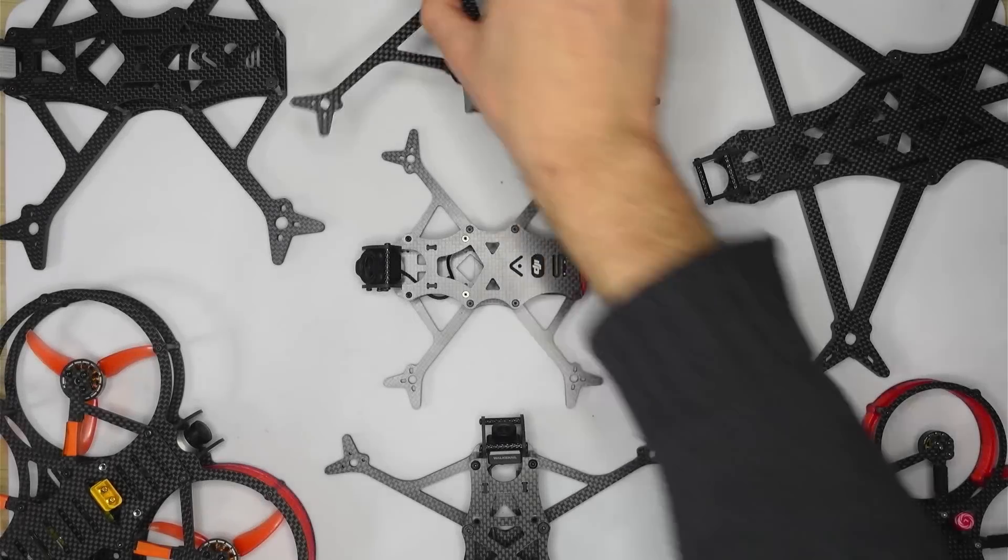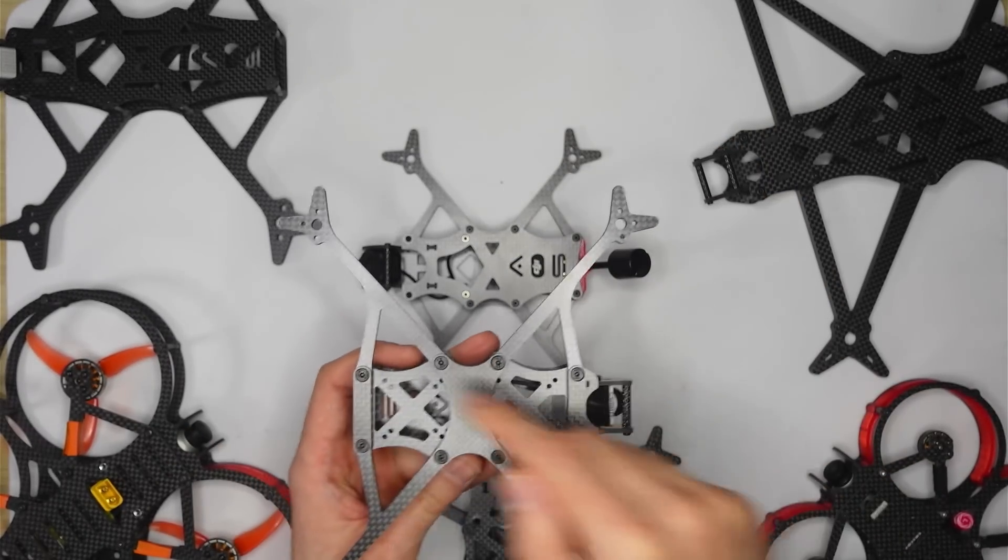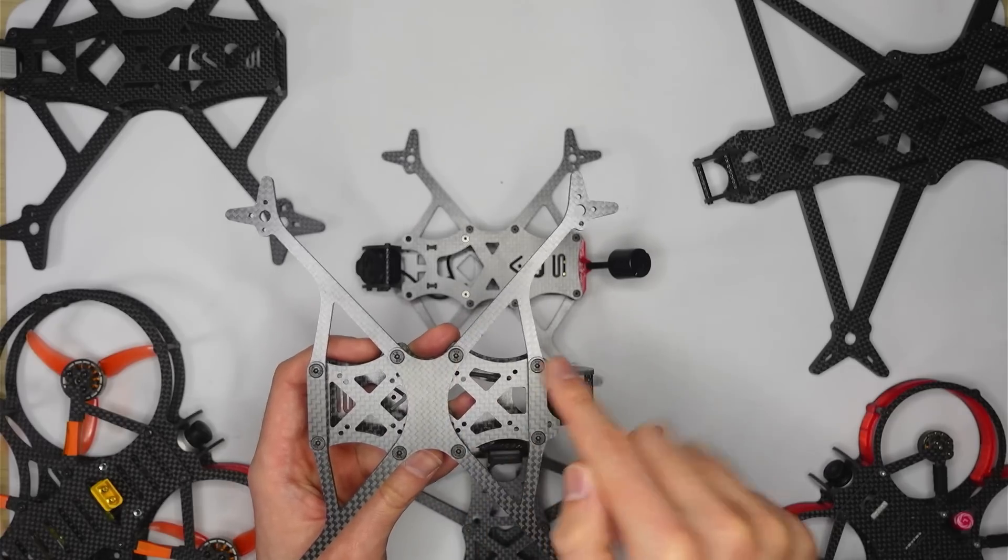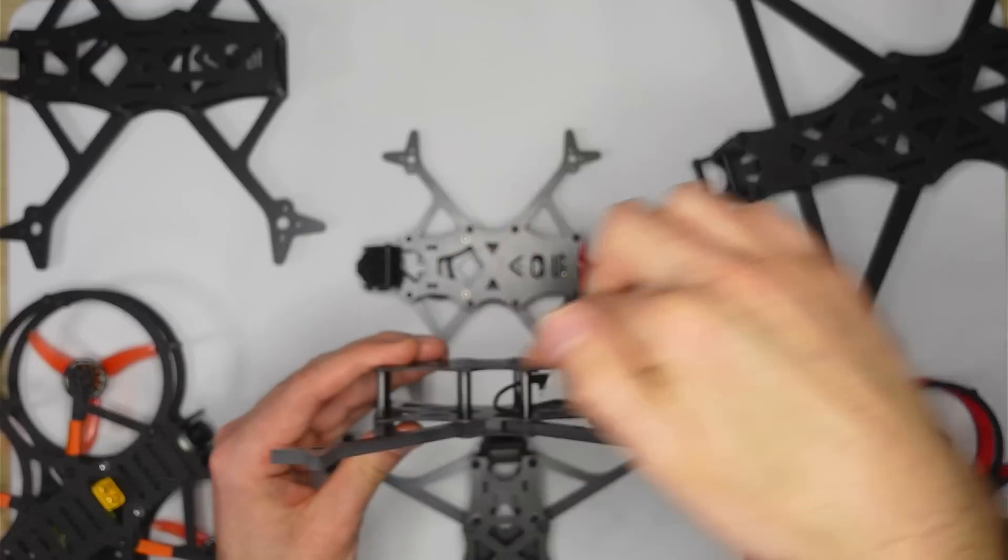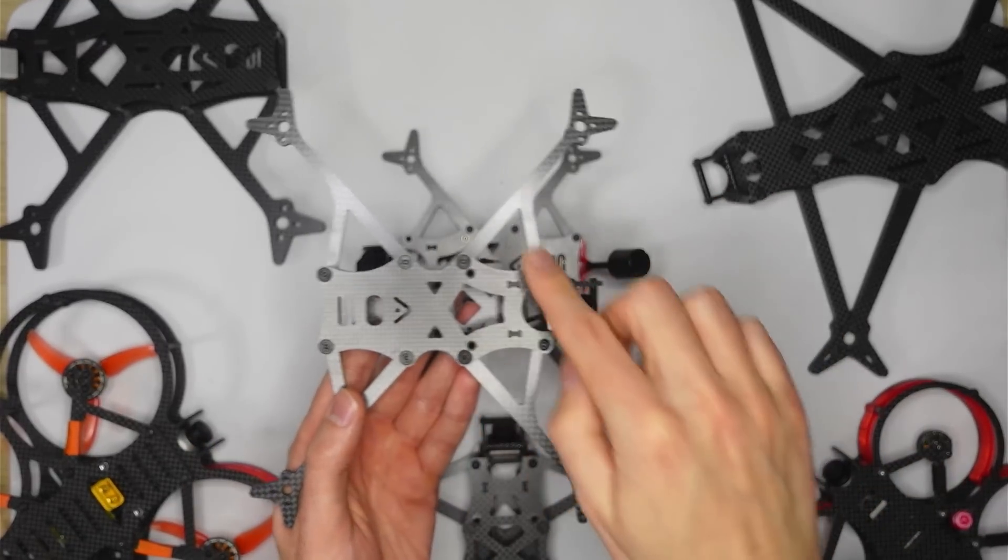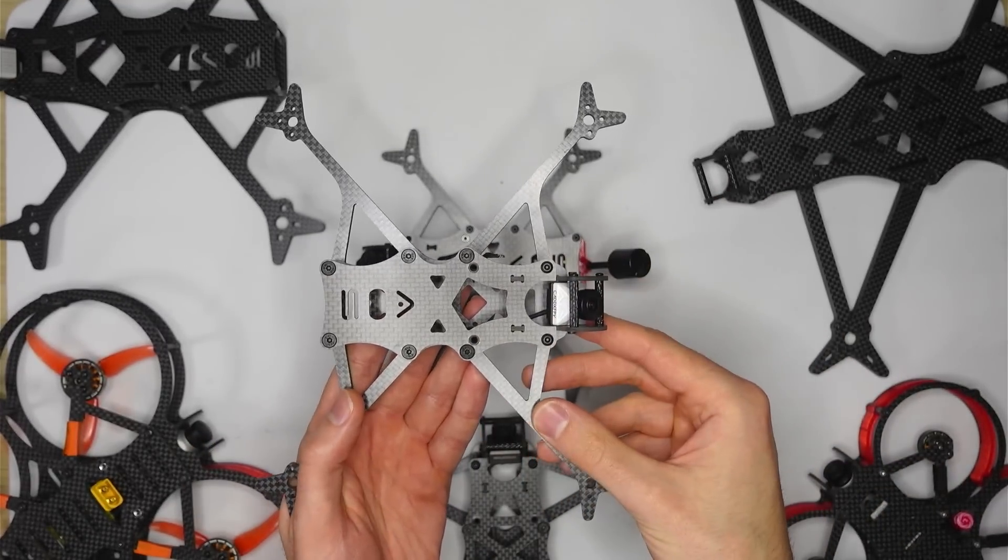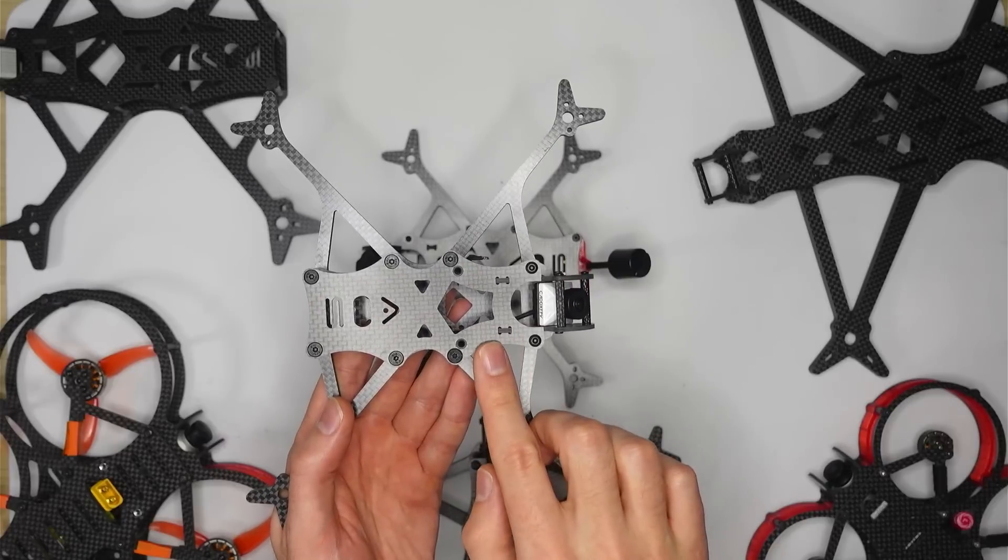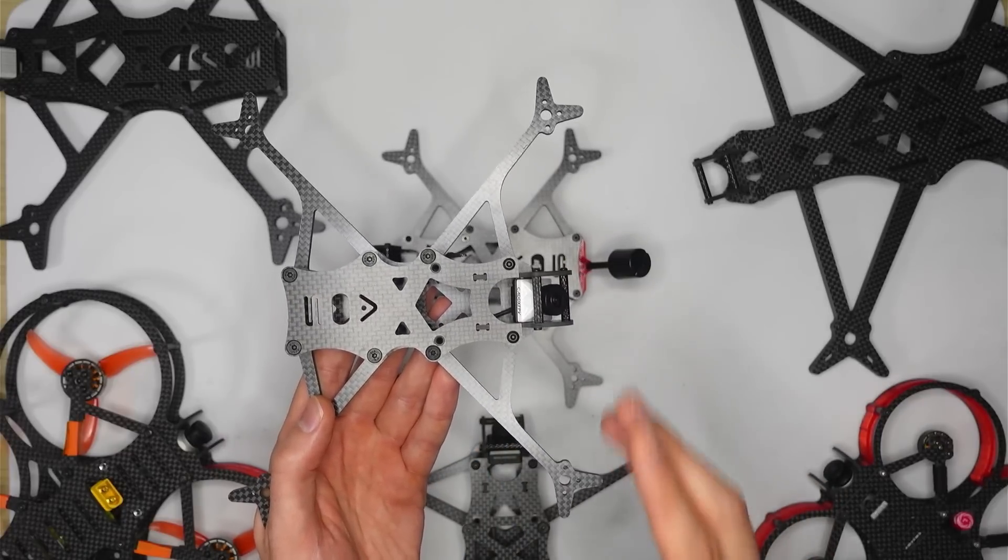The third thing that I consider when designing a frame is simplicity. All AOS O3 frames are designed to be really simple to build. You simply have eight screws in the bottom of the frame, eight standoffs in the middle, and eight screws in the top of the frame. And this makes it really easy to build, really easy to maintain, whether you're an experienced FPV pilot or brand new to the hobby. Now we're going to go through each of these new AOS O3 frames in turn. And there are timestamps down in the video description, so feel free to skip to the frames that interest you the most.